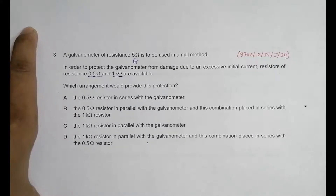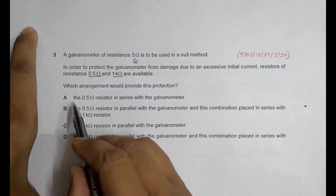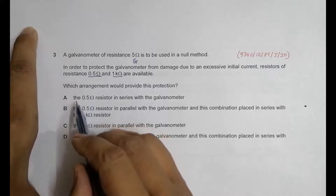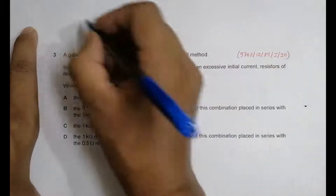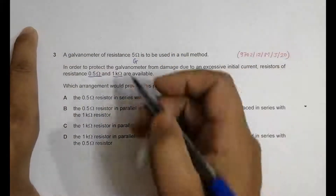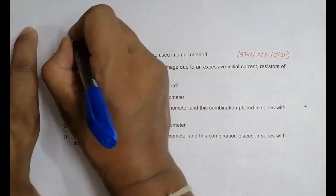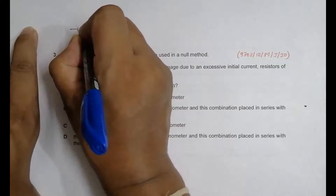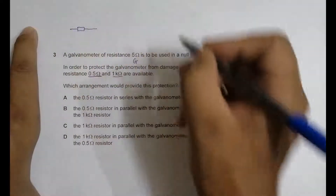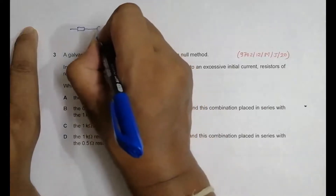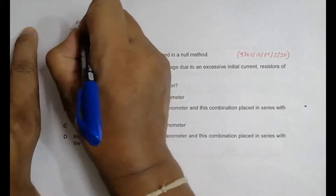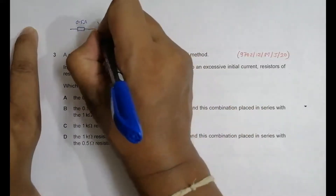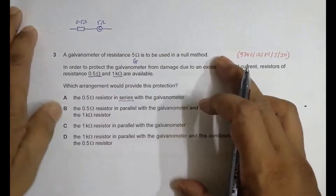We have to try each choice one by one to be specific in our answer. Choice A says we have to use the 0.5 ohm resistor in series with the galvanometer. Let's draw the diagram. The 0.5 ohm resistor is in series with the galvanometer, whose resistance is 5 ohm.